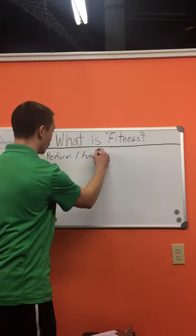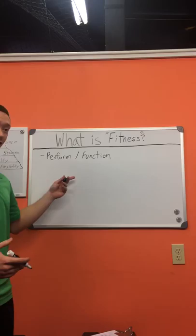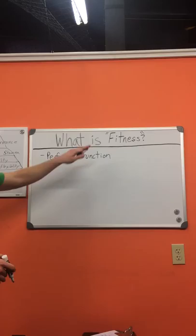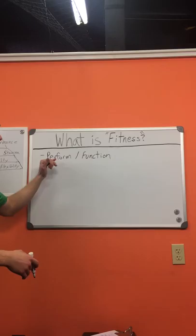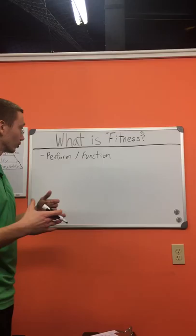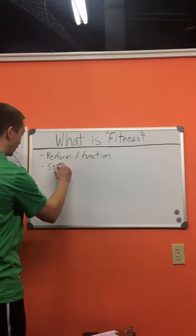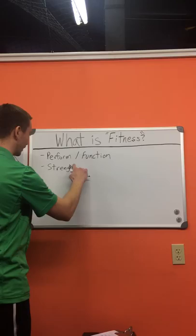Being able to perform certain tasks — like getting up the stairs or running a 40 in four seconds — whatever that performance means to you, as well as being able to perform with correct function or a certain level of functionality. We all have a level of performance and functionality. We're using our overall fitness level to improve that day in and day out, in the gym, at work, at home. So what makes up performance and functionality? Performance: being able to perform certain tasks. Functionality: being able to do them correctly.